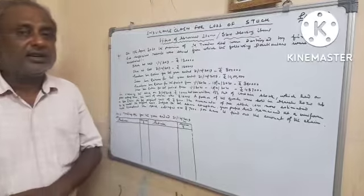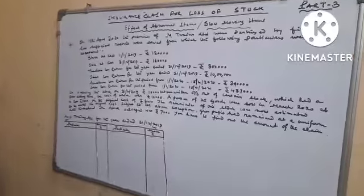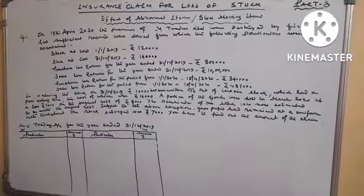Hello students, welcome to my channel KT's Commerce Classes. Today Insurance Claim for Loss of Stock Part 3 Effect of Abnormal Item and Slow Moving Items.